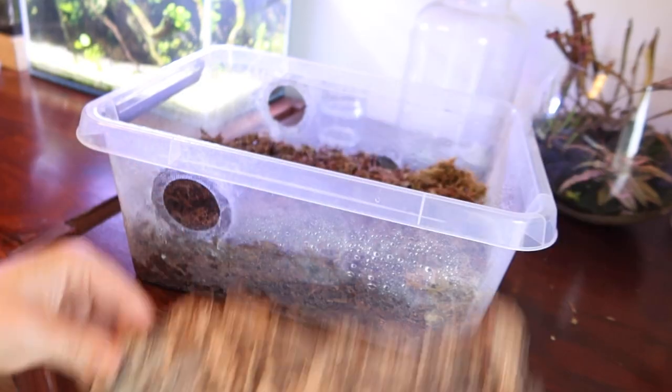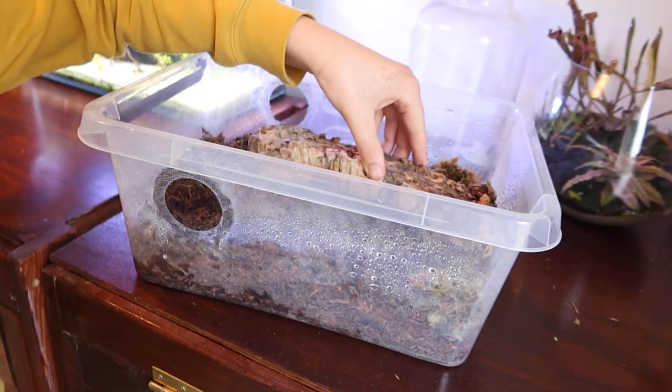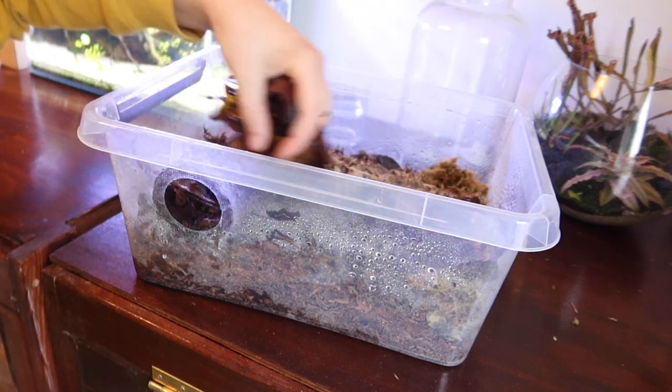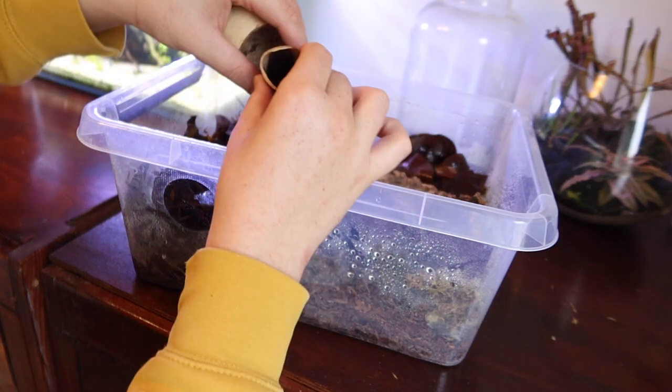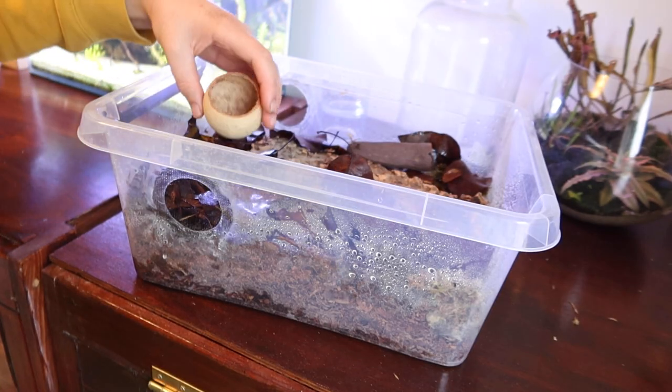Next, I added a piece of cork bark, overlapping both sides of the setup and added the leaf litter from before. I finished the setup off with a few botanicals, after which the isopods could be introduced.